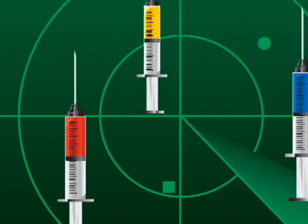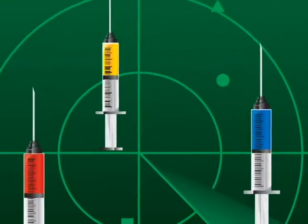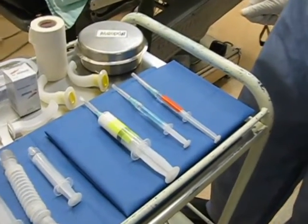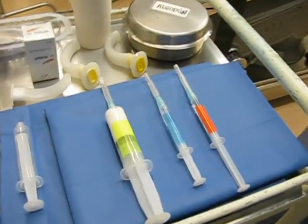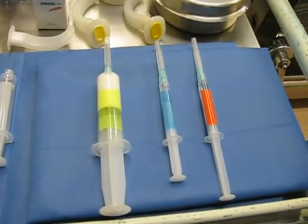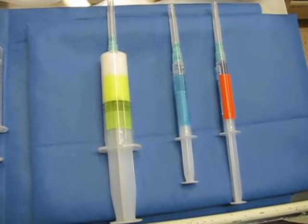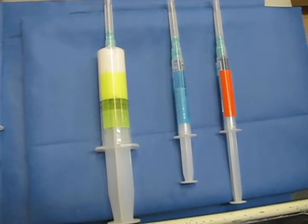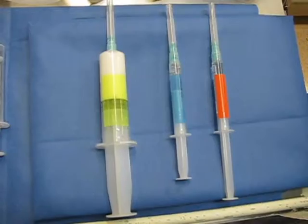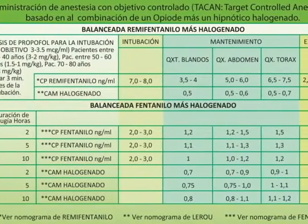Once the patient is ready in the preoperative room, the medication is prepared using the following color standards: blue for the opioid (remifentanyl), red for the muscle relaxant (rocuronium), and yellow for the hypnotic (propofol). Before beginning the procedure, there must be a flight plan.